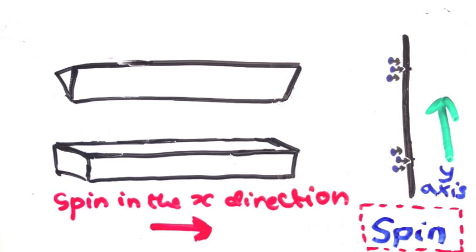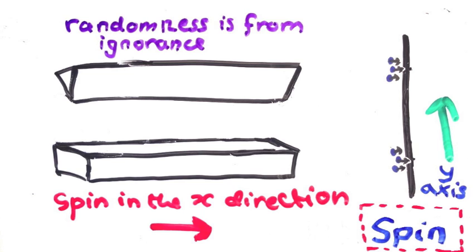Again, Bohmian mechanics needs to explain this. First, we need to deal with something. There is no real randomness in Bohmian mechanics, only randomness from ignorance, so we need to be able to explain why half the particles go one way and half the other.